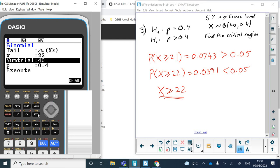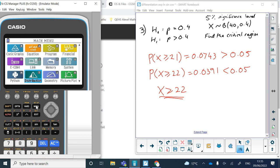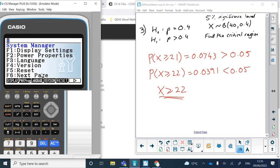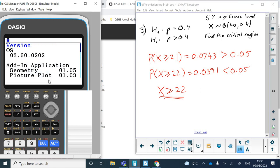So any calculator that has got the right operating system, the latest one, will have this distribution on it. So if you want to find out which operating system you've got, you click on, you go into the system menu, and then you want to check your version, so that's F4, and we can see that this is version 3.6. So I think it has to be 3.6 in order to have this, because it's a very recent addition.